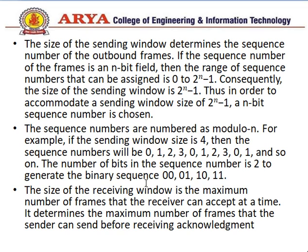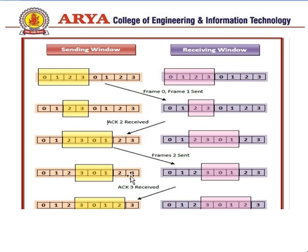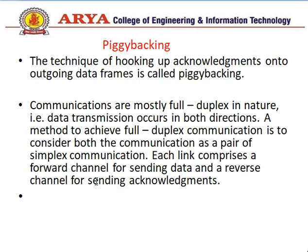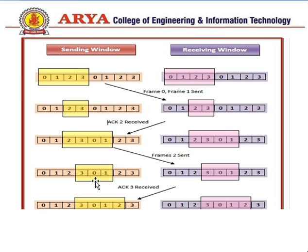The number of bits in the sequence number is 2, generating binary sequences 00, 01, 10, 11. The size of the receiving window is the maximum number of frames the receiver can accept at a time, determining how many frames the sender can send before receiving acknowledgement. In the diagram, the sending window and receiving window are both of size 4. Once frames 0 and 1 are sent, the window shifts to the next pointer, and similarly shifts again once frames are acknowledged.